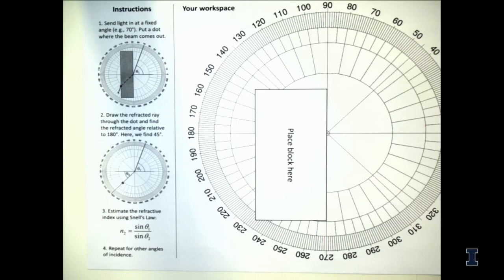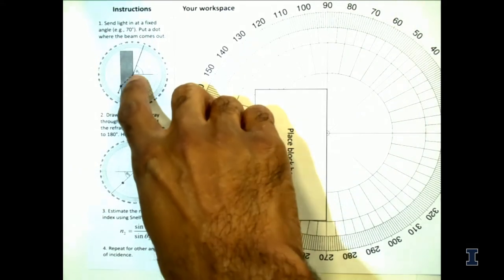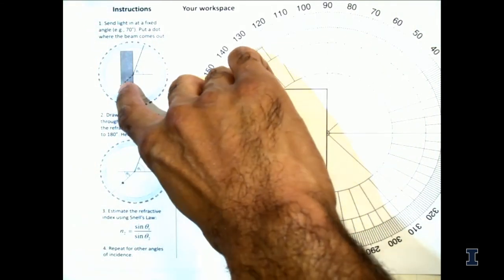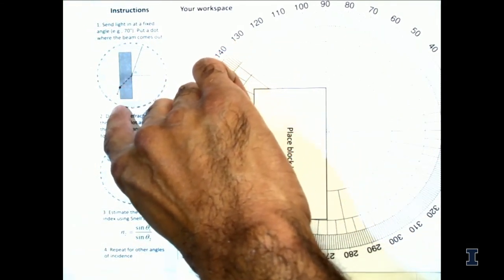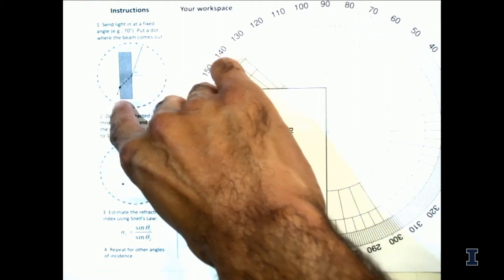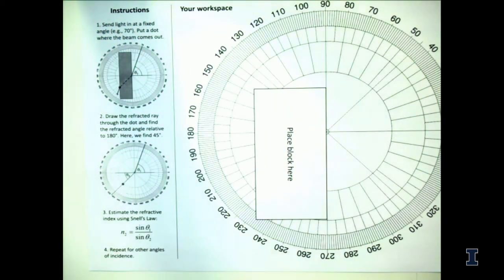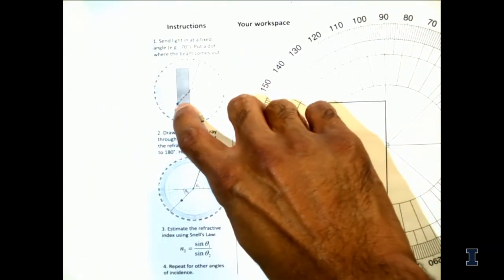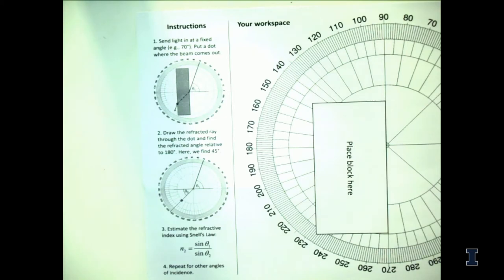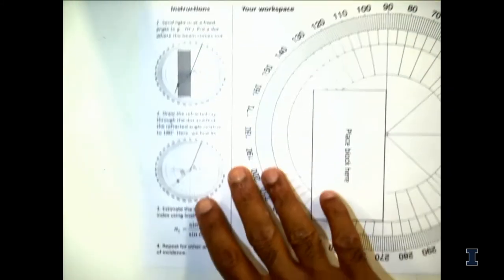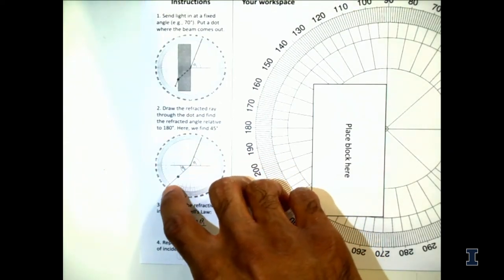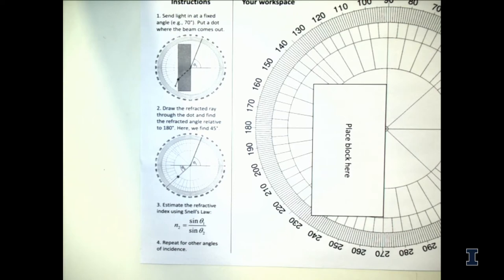A common error students make is tracing the ray after it bends and following it to wherever it hits the protractor — that won't give the correct angle. Instead, put a dot where the light exits the block, then lift the block and draw a line from the center through that dot to measure the output angle. You can then estimate the refractive index by calculating the ratio of sine theta one over sine theta two.